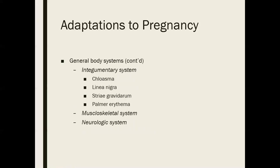The spinal curvature becomes more pronounced as you carry weight in the front of the abdomen. There are notable changes in posture, and increased mobility of the pelvic joints helps to enlarge the pelvis in preparation for birth. Often we'll hear about a woman waddling slightly because of that increased laxity in the pelvic joints, which changes her gait.